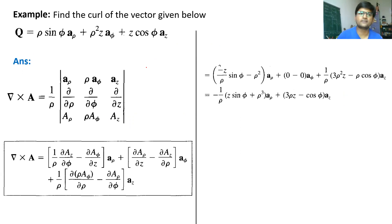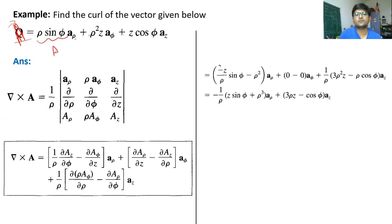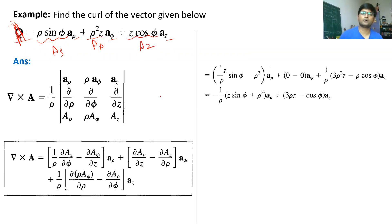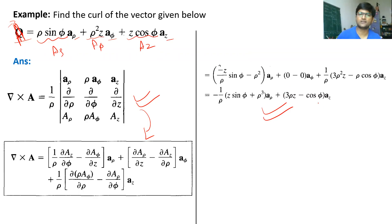Let us quickly do an example on curl. A vector field A is given, and since you can see components in rho, phi, and z, this is in cylindrical coordinates. So A_rho, A_phi, and A_z are identified. Using the curl formula for cylindrical coordinates and substituting all these values, you will get the final answer. I want you to solve it yourself and check whether you are getting the same answer.